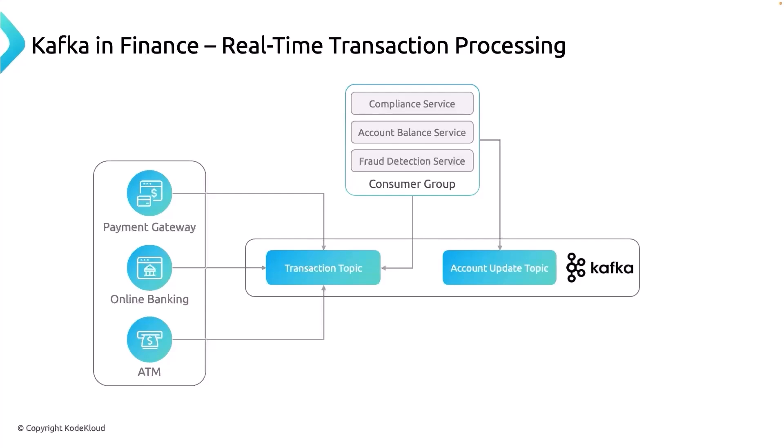Kafka is acting as a central nervous system — storing the relevant events in what we call a topic. All transactions flow into the transaction topic, then we consume the information, do some preprocessing, and update it to the account update topic. Once updated, you receive a notification that a certain amount was either credited or debited from your account.